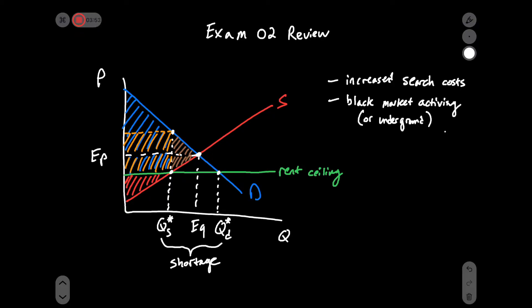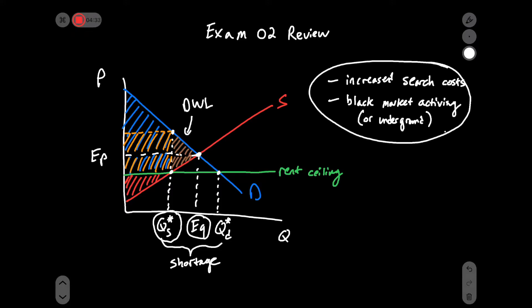What we do not see is a larger number of apartments rented. In fact, we end up at a quantity of QS-star, which is less than the equilibrium quantity — so actually fewer apartments are rented out. This is not a more efficient allocation of housing because we've got deadweight loss. The number of apartments rented changes from equilibrium quantity E-sub-Q to QS-star. So the only remaining options are increased search costs and black market activity.